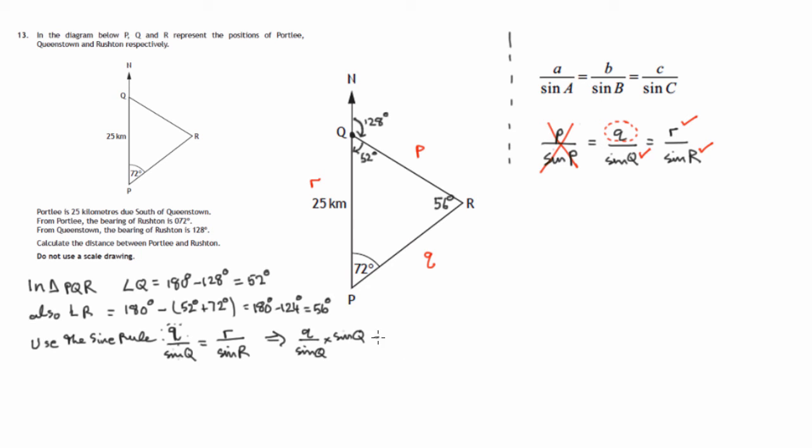So the left-hand side gets multiplied by sine Q. And the right-hand side gets multiplied by sine Q. The reason we're doing that is so that we can get Q on its own, which is the thing we're trying to find.